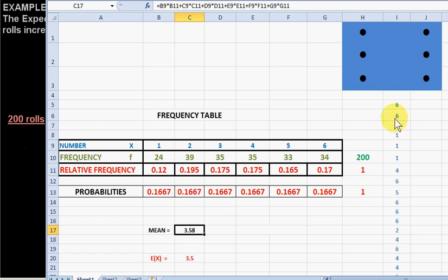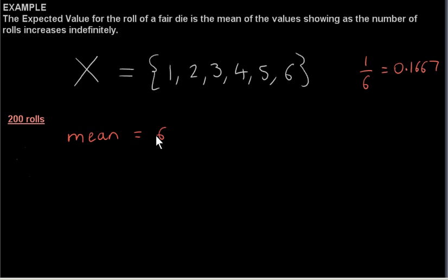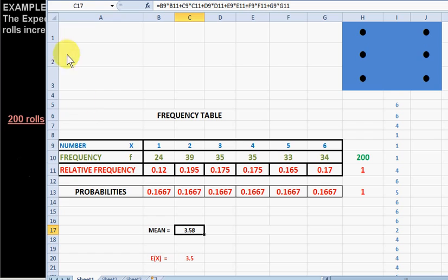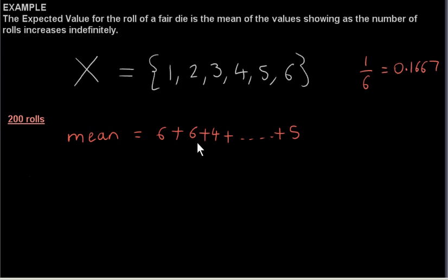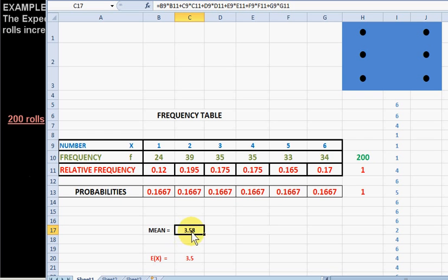We see that the first three values here are 6 plus 6 plus 4 and so on. If we want to see the 200th value, we can just type in I204, that's the cell. So, it's 5. So, we sum these 200 values, divide by 200, we get 3.58.